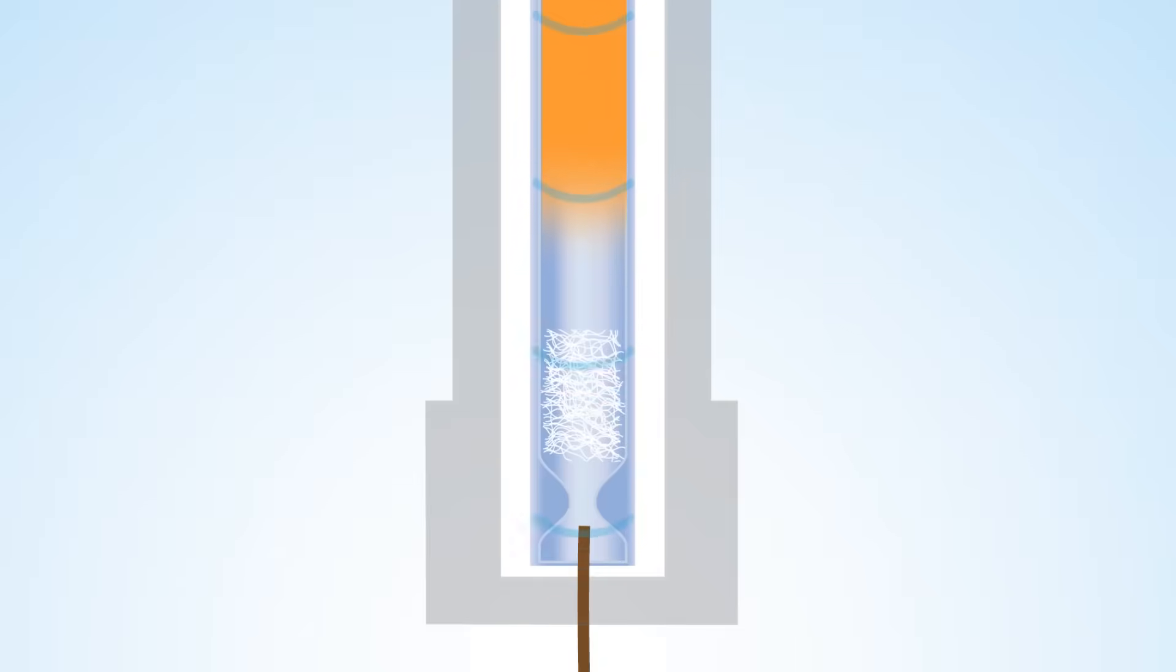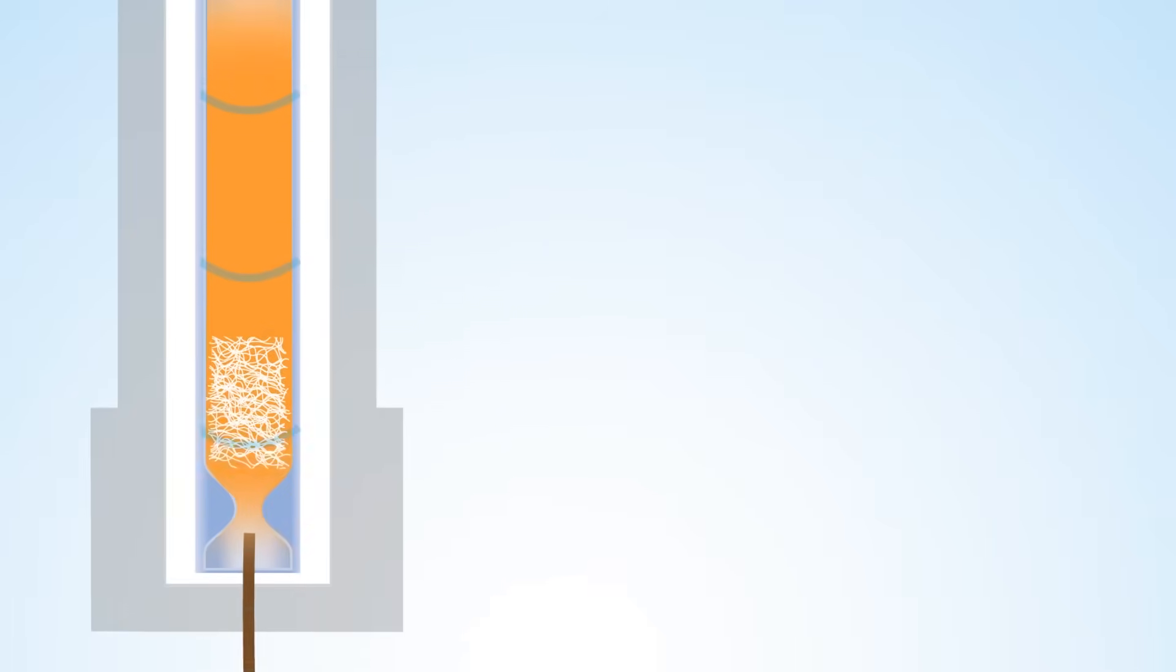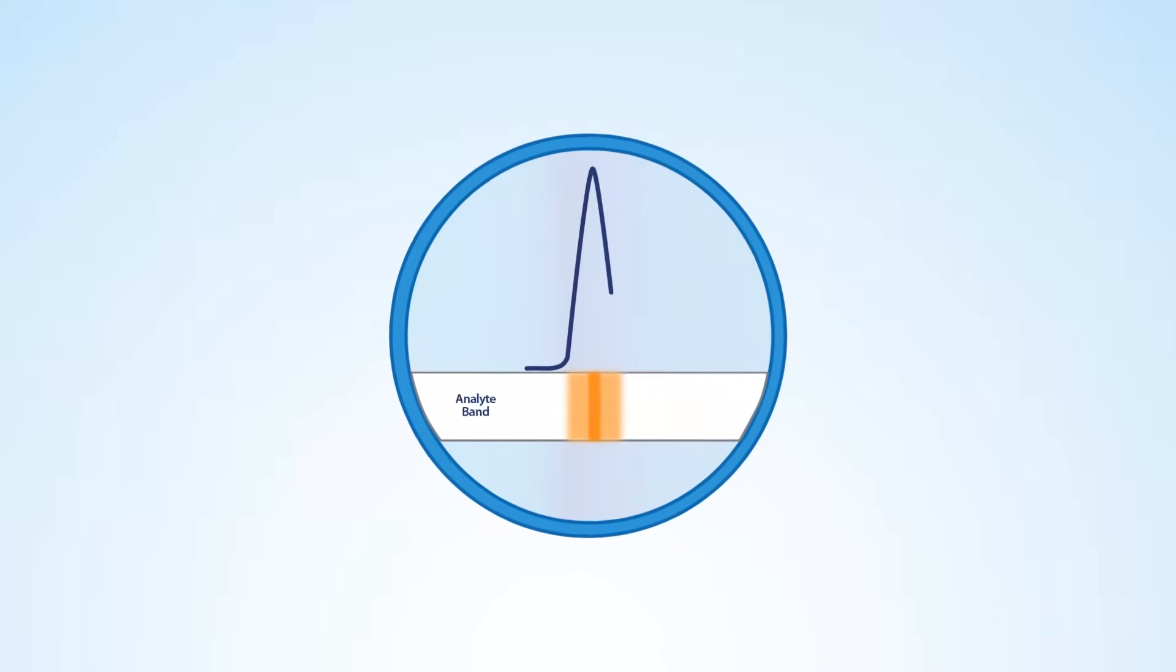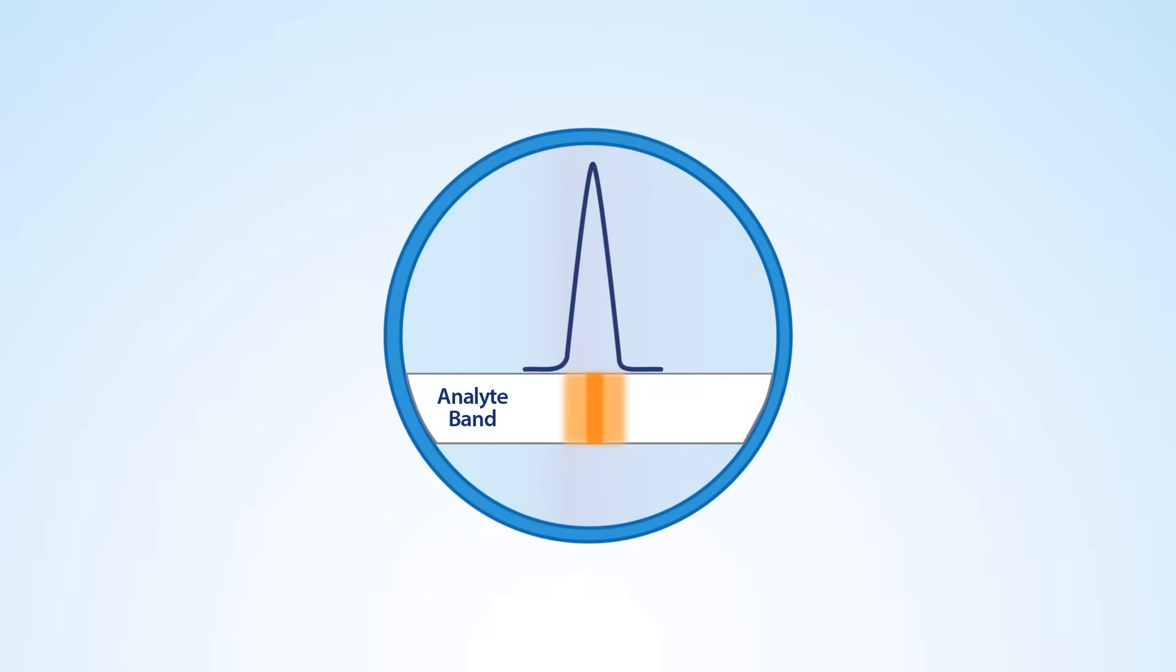However, the slower flow rate into the column can result in the degradation of active analytes through adsorption and breakdown. It also leads to increased diffusion causing band broadening. This is especially noticeable for more volatile analytes resulting in wider peaks.